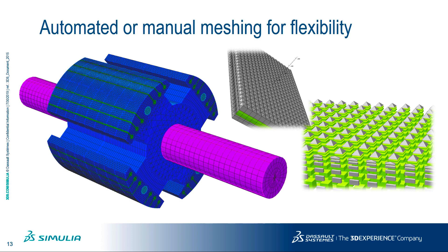Automatic tetrahedral meshing is the easiest way to fill a 3D domain with finite elements. However, for certain problems, to achieve the required accuracy within computing constraints, the user may need to deploy hexahedral meshes with close control over discretization. Opera's meshing approach of fully automatic, fully manual or mosaic gives the user the ultimate control.